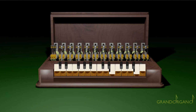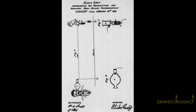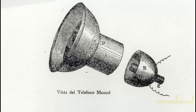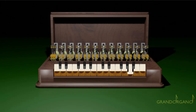Fu brevettato nel 1878 dall'inventore americano Elisha Gray, noto nella storia delle telecomunicazioni per essere stato uno dei pretendenti all'invenzione del telefono. Tra il 1871 e il 1876, tre inventori di tre nazionalità diverse si contesero questo diritto: l'inglese Alexander Graham Bell, l'italiano Antonio Meucci e l'americano Elisha Gray. Sia Gray che Meucci persero tutte le cause nei confronti di Bell. Solo per curiosità storica, il Congresso degli Stati Uniti nel 2002 ha riconosciuto Antonio Meucci ufficialmente come l'inventore del telefono.